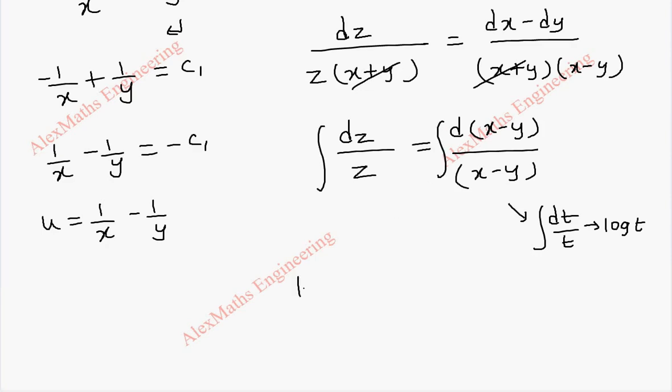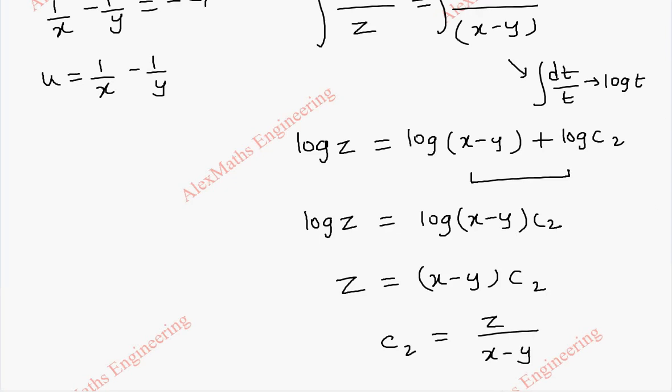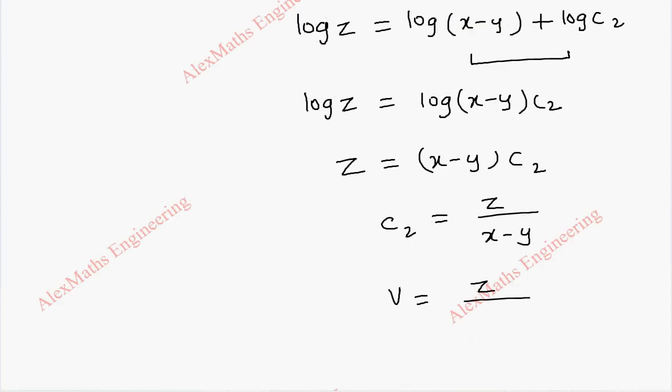So, now when I integrate on both the sides, this becomes log z equal to log of x minus y plus, since both are log, we take log c2. So, here if I combine these two terms using log rule, it is log of x minus y into c2. By removing log, z equal to x minus y into c2 and c2 will be z by x minus y. And this we take it as v, that is z by x minus y.